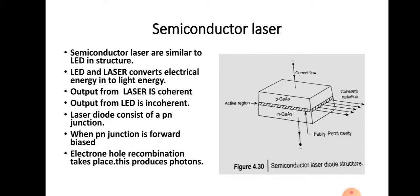In order for light to emit, we have to forward bias the PN junction. That means the P-type material is connected to the positive terminal of the voltage source and the N-type material is connected to the negative terminal of the voltage source, so that it will be forward biased. Once it is forward biased, electrons from the N region will move to the P region and recombine with the holes, and they produce light, as shown in the figure.